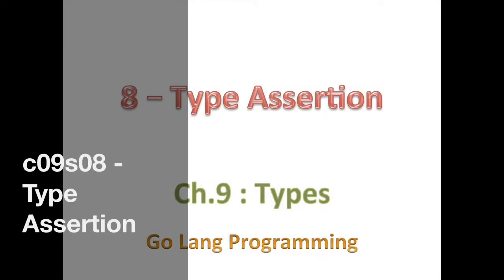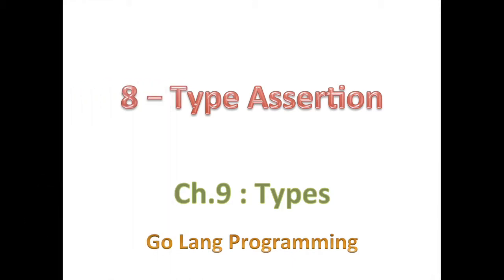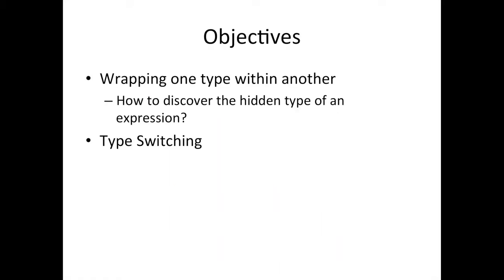Hello, good day, and welcome back. Today we're going to talk about type assertion. Before we get into it, I want to frame it a little bit. We're going to look at some diagrams to get the idea, and then we're going to look at the code. In this section, we're going to see how you can wrap a type within a type, and then how you can discover what that hidden type is — which is something we call the dynamic type. Then we're going to look at type switching towards the end.